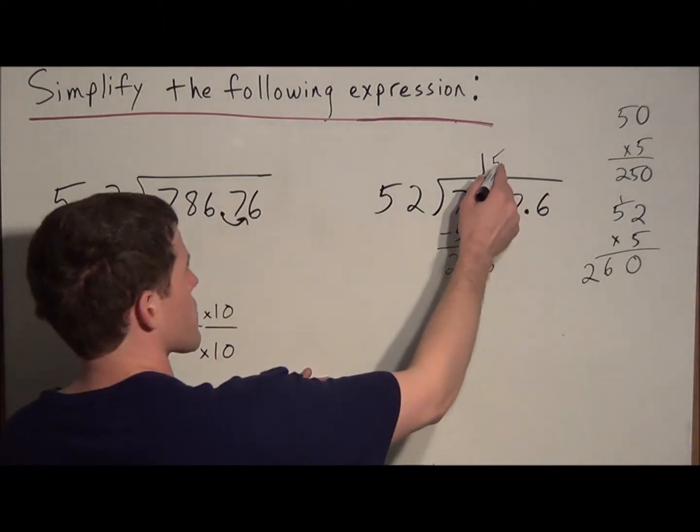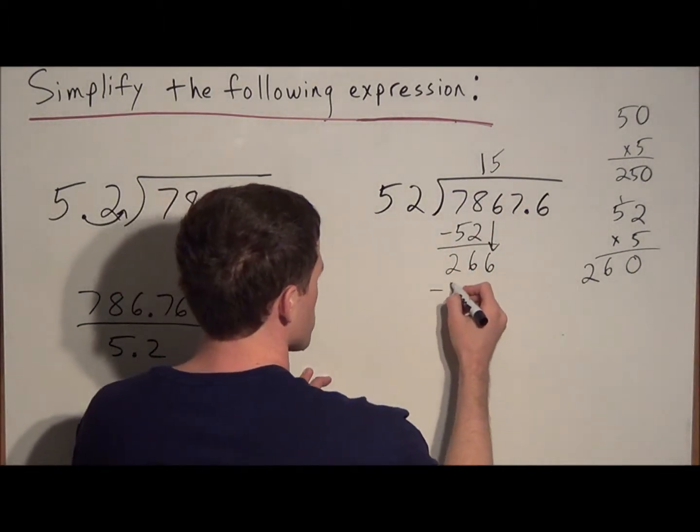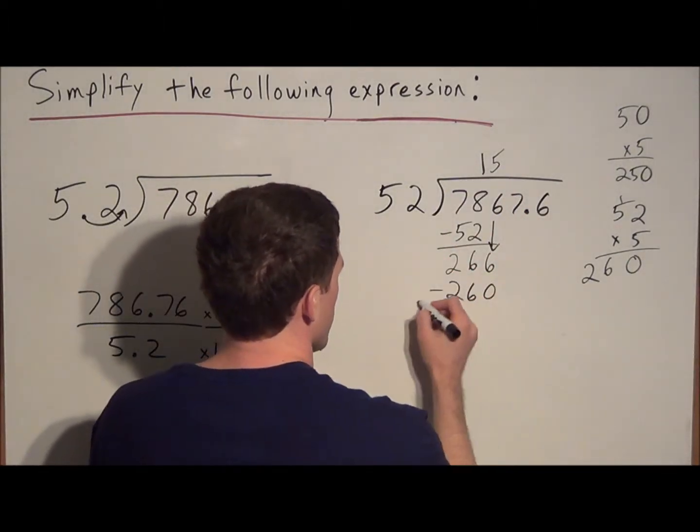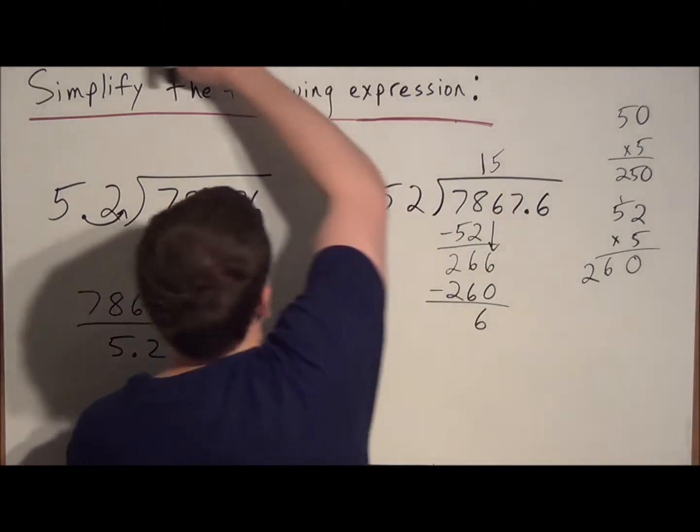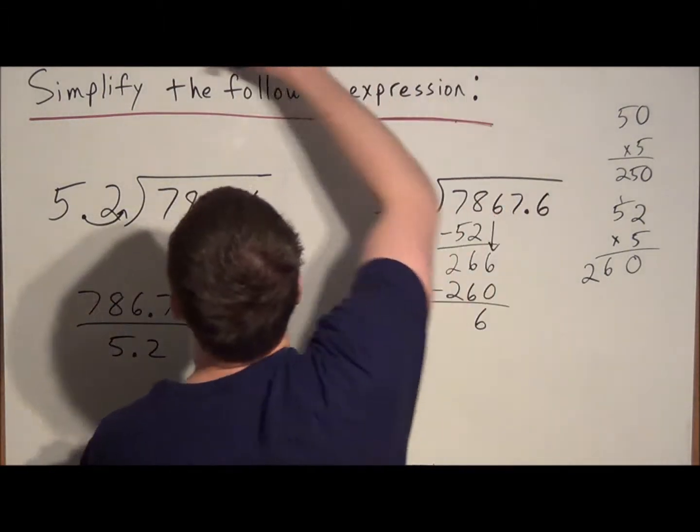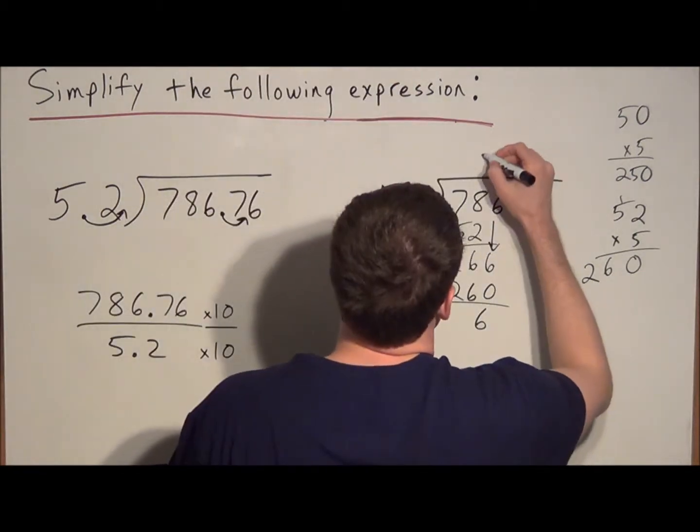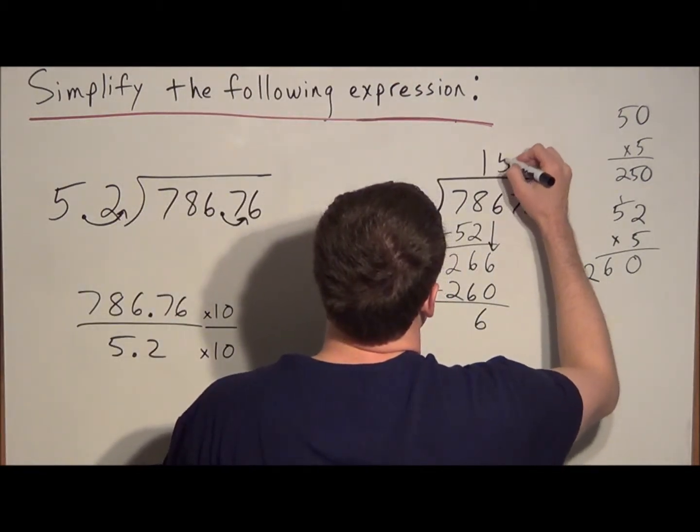So that tells us we're going to subtract 5 times 52, or we're subtracting 260. And we have a remainder of 6 now. I'm just going to make these numbers up here a little bit darker and neater. So we have 1 and a 5.